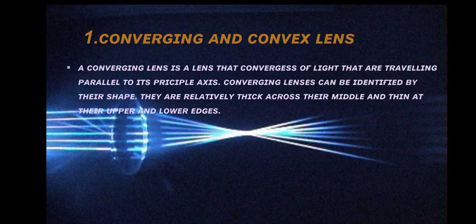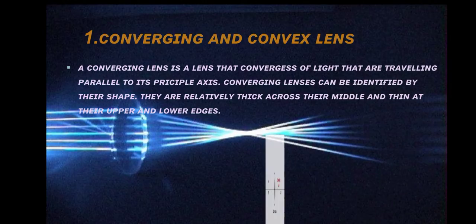Converging or convex lens. A converging lens is a lens that converges rays of light that are traveling parallel to its principal axis. Converging lenses can be identified by their shape — they are relatively thick across their middle and thin at their upper and lower edges.